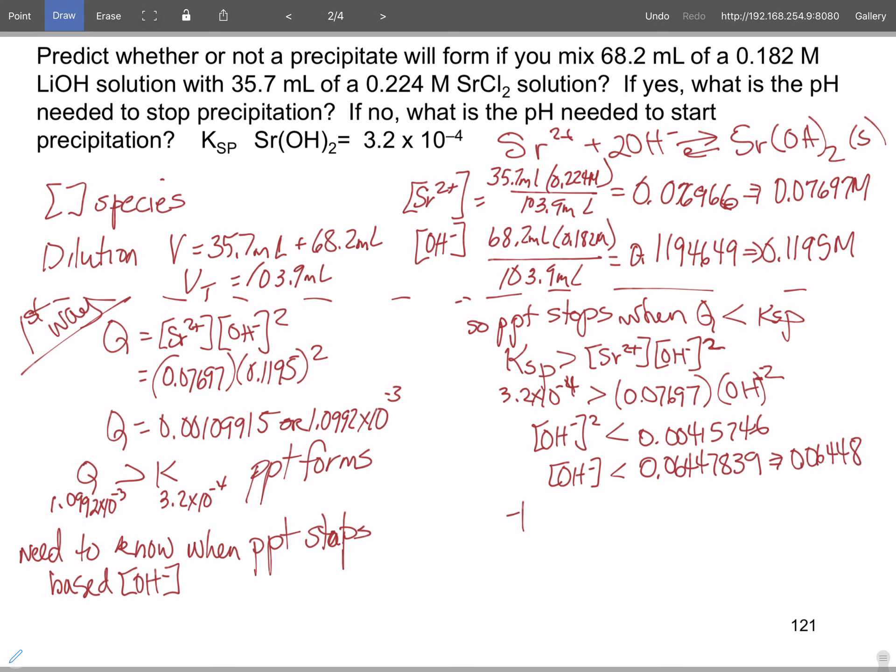Take the negative log of that, 0.06448, which gives us a pOH value of 1.9, which means the pH has got to be less than 12.81.